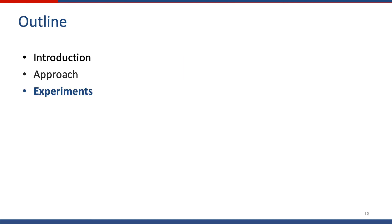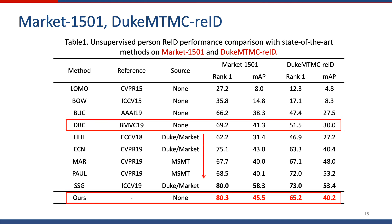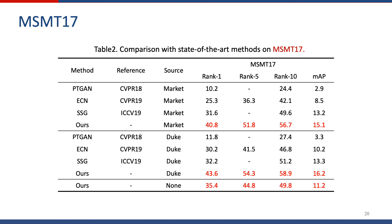For experiments, we conduct evaluations on Market and Duke. As the results show, our method achieves state-of-the-art performance in the unsupervised setting. We also get comparable performance to transfer learning-based methods. A similar result can be observed on MSMT, where our work achieves the best performance on both unsupervised and transfer learning settings.